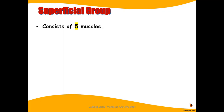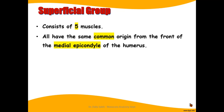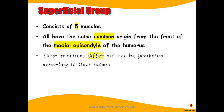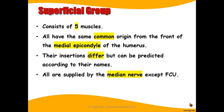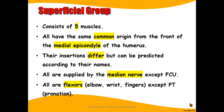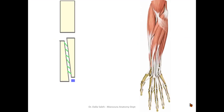The superficial group of muscles of the front of the forearm consists of five muscles. They all have the same common origin from the front of the medial epicondyle of the humerus. Their insertions differ, but we can predict the site of their insertion according to their names. They are all supplied by the median nerve, except the flexor carpi ulnaris, which is supplied by the ulnar nerve.